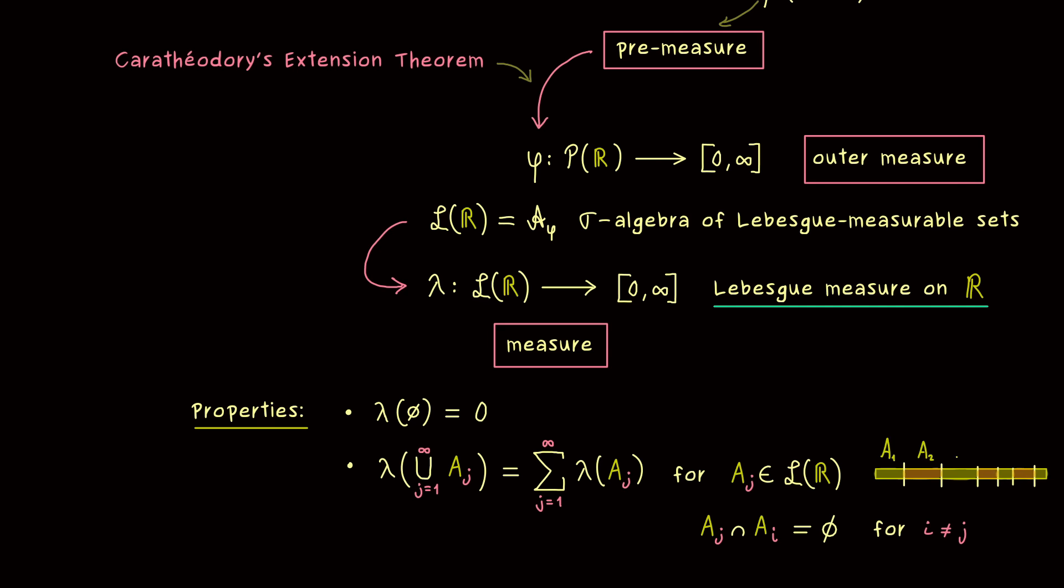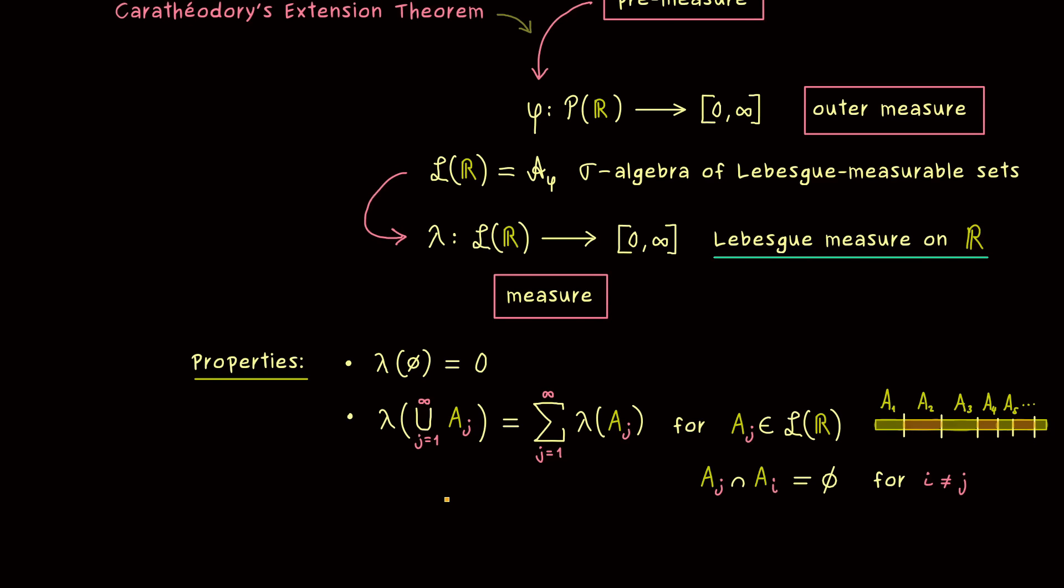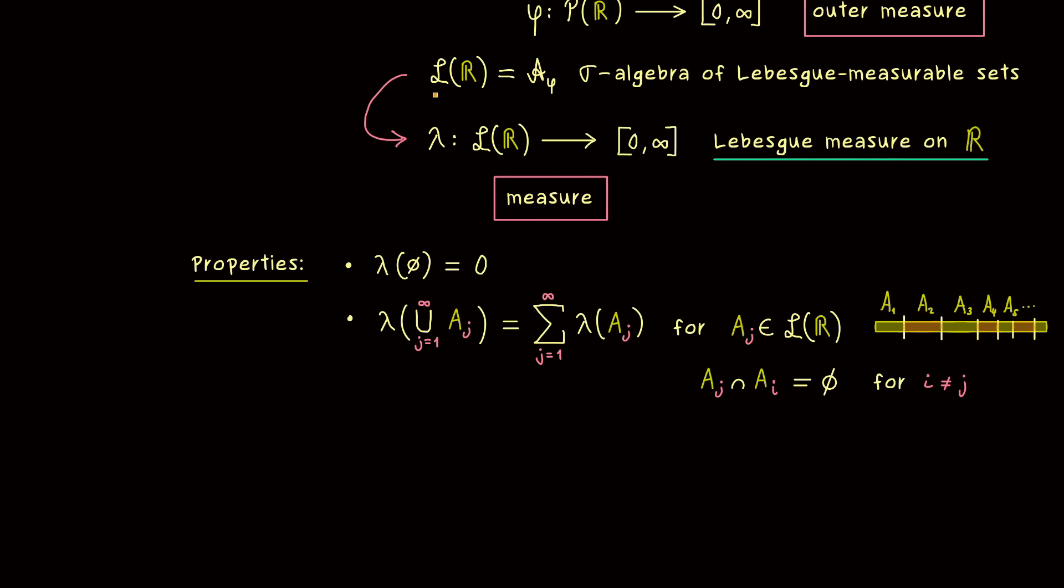However, please don't forget, here we have two key ingredients. First, we need disjoint sets. And we can only go to countable many. In fact, this property is also the reason, why we want to have a sigma algebra.